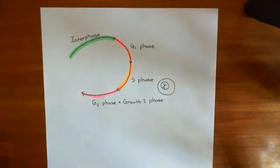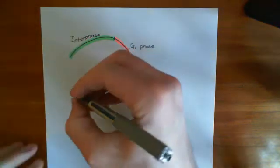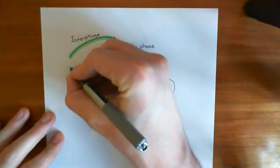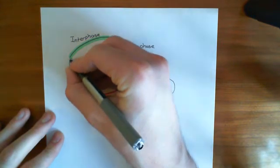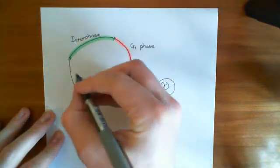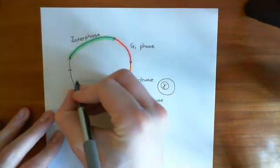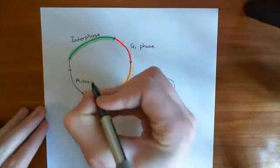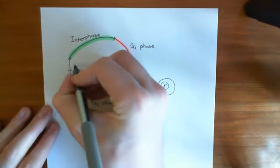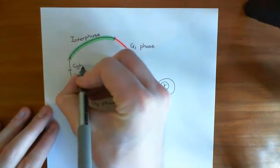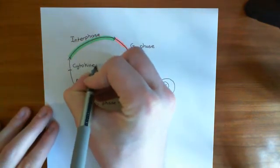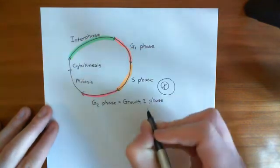We then have the M phase of the cell cycle, which consists of two important steps: mitosis, which is nuclear division — splitting the nucleus in two — and then cytokinesis, which is splitting a cell with two nuclei into two separate cells.